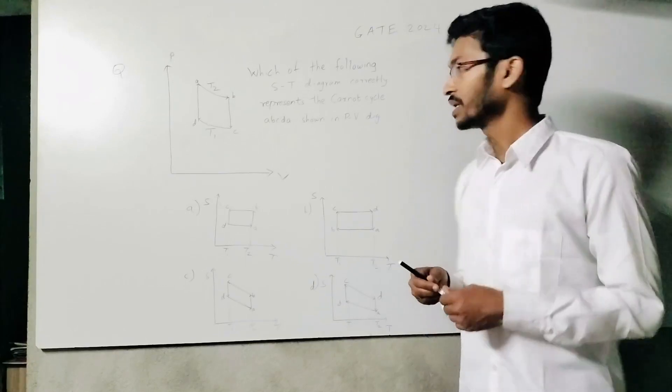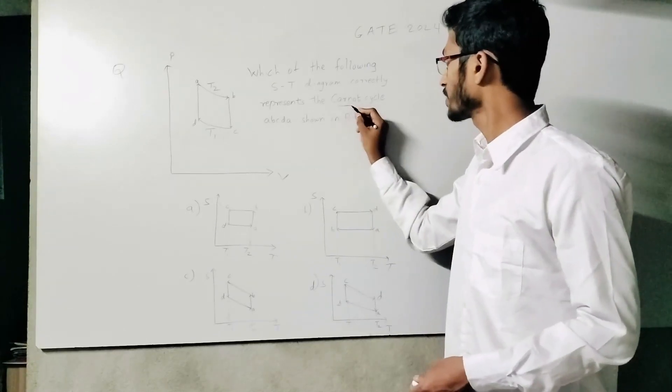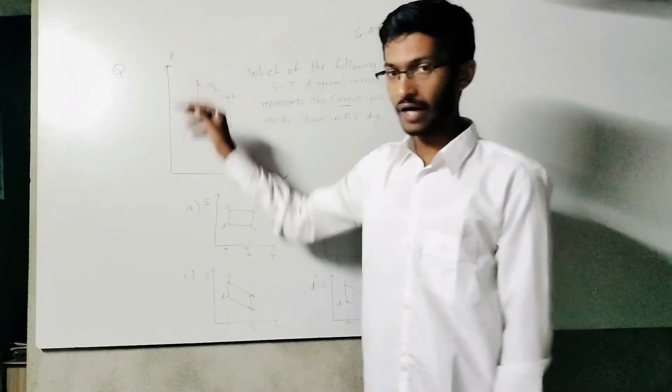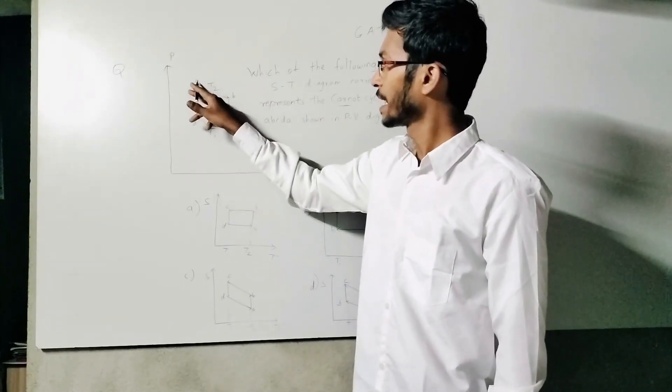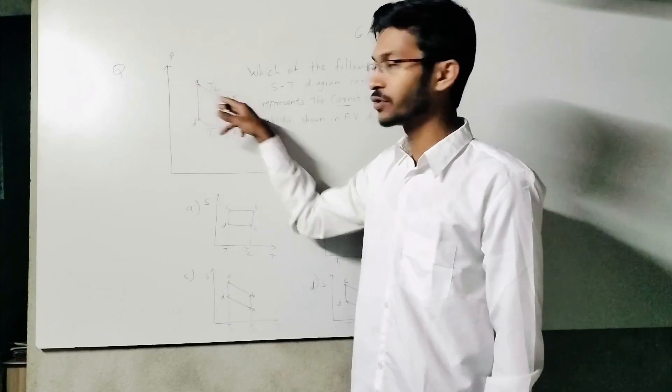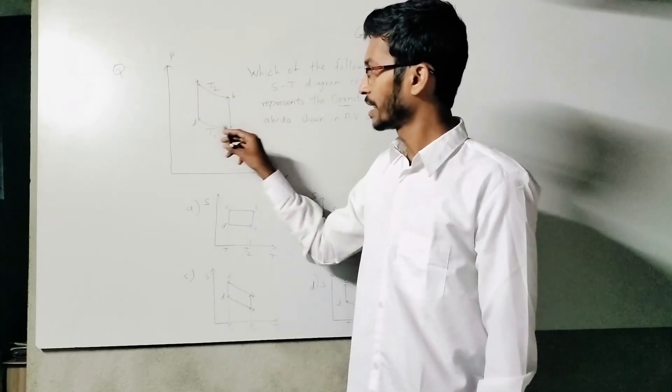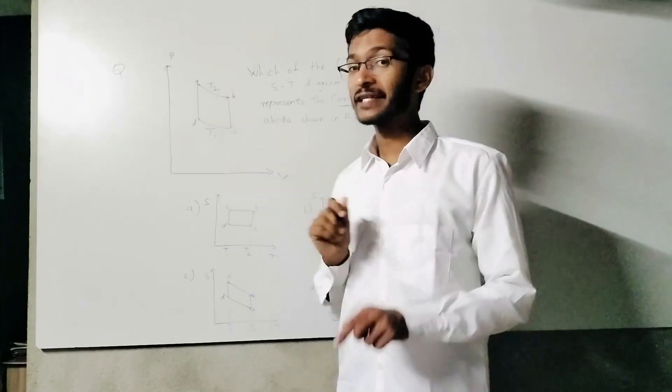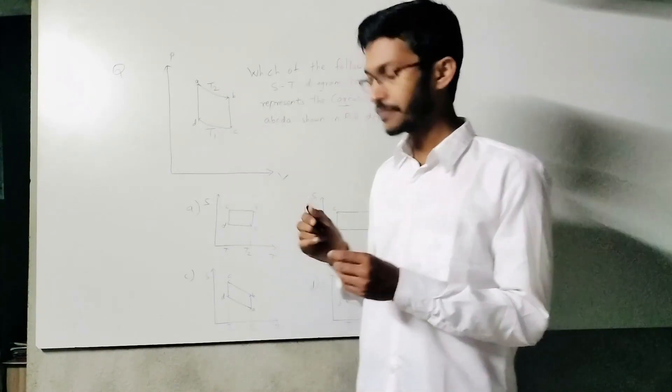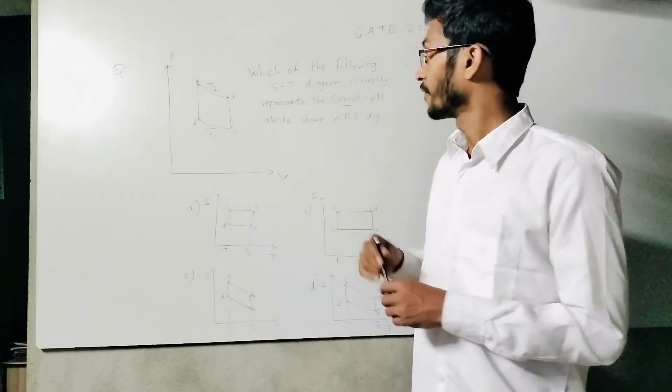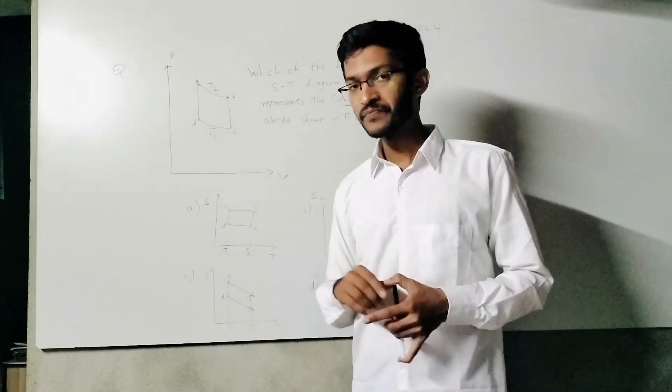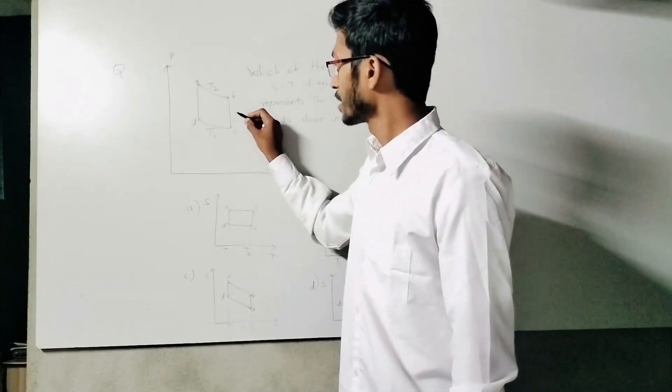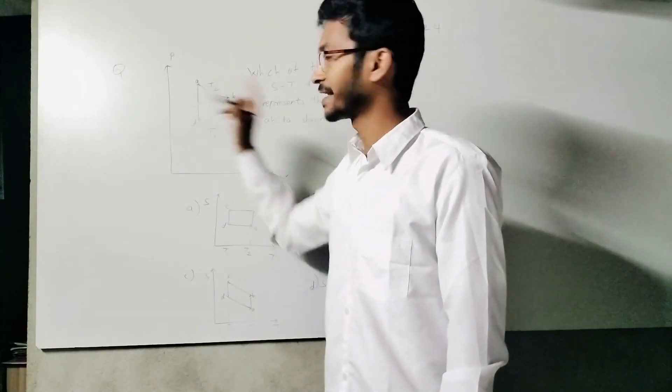Two things are given. First, we have a Carnot cycle. Second, the graph shows AB happening at temperature T2 and CD happening at temperature T1. Therefore, these two are isotherms. In a Carnot cycle, the other two processes must be adiabatic, so DQ is constant for these isotherms.